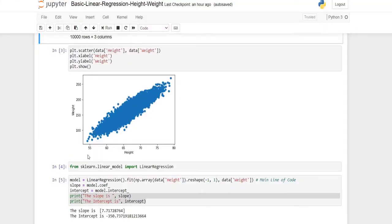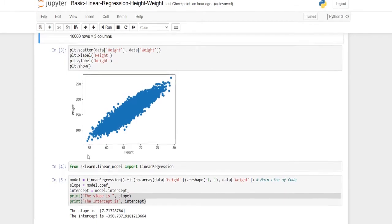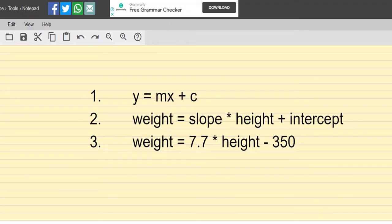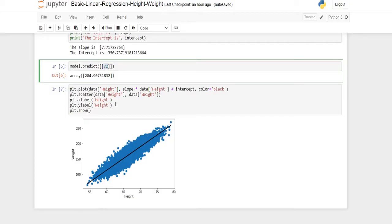In this example, the fifth block of code is creating the linear regression model for us. We have printed the value of slope and intercept. The approximate value of slope is 7.7 and for intercept it is -350. With the knowledge of slope and intercept, we have come up with the formula: weight is approximately equal to 7.7 times height minus 350.